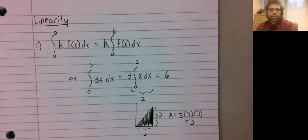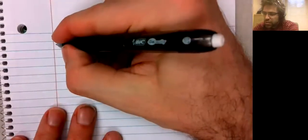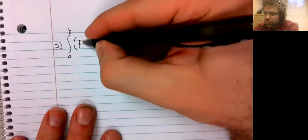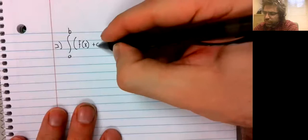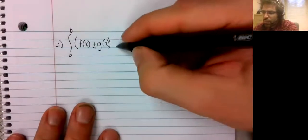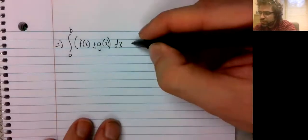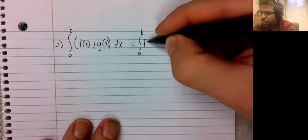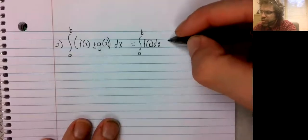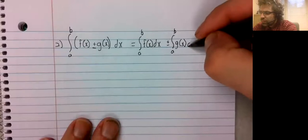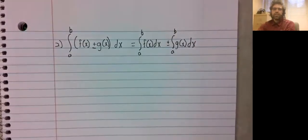The linearity is two statements always presented together. Statement two. If we're taking the definite integral of either a sum or a difference, then that will be the sum or difference of definite integrals.